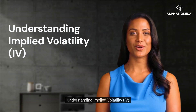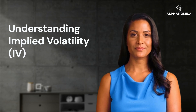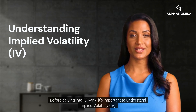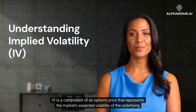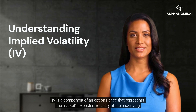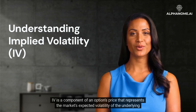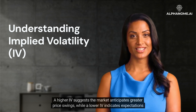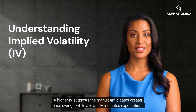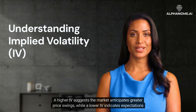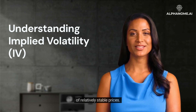Understanding Implied Volatility, IV. Before delving into IV rank, it's important to understand Implied Volatility, IV. IV is a component of an option's price that represents the market's expected volatility of the underlying asset over the life of the option. A higher IV suggests the market anticipates greater price swings, while a lower IV indicates expectations of relatively stable prices.